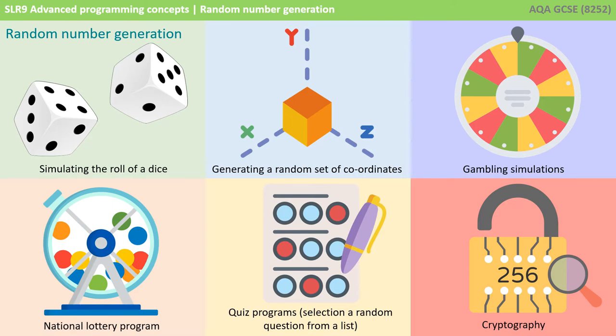We provided a few examples here: simulating the roll of a dice, generating a random set of coordinates, any form of gambling game or simulation, for example the national lottery, quiz programs, so we could select a random question from a list or a bank of questions, and indeed random number generation is used in a whole host of cryptography style programs.